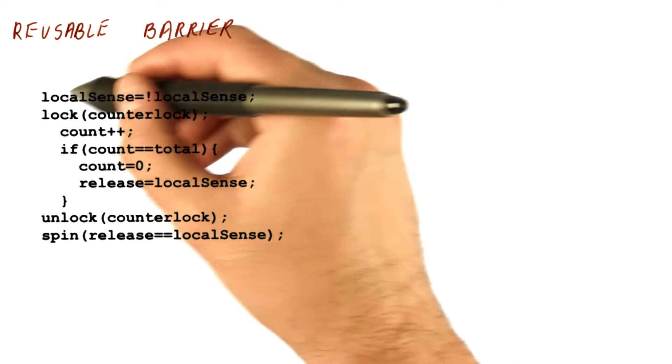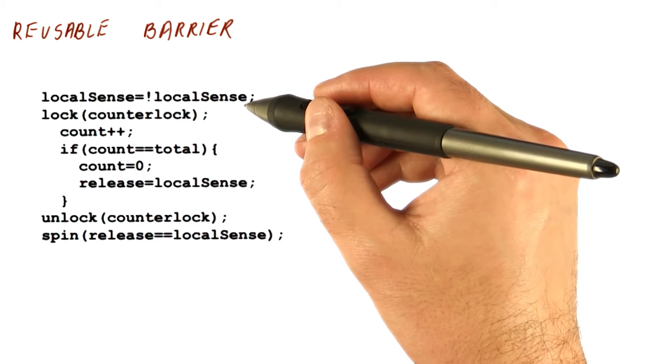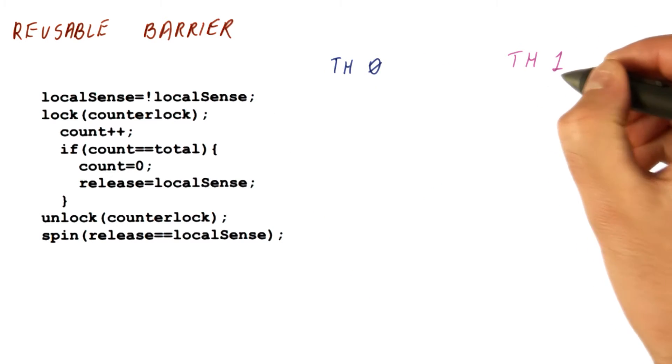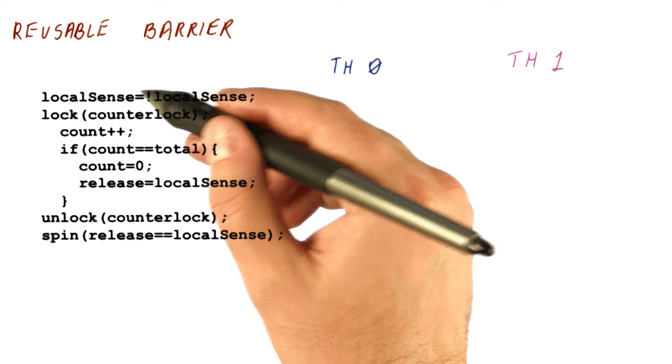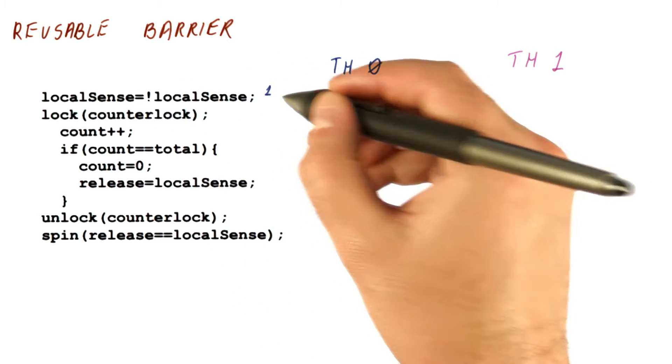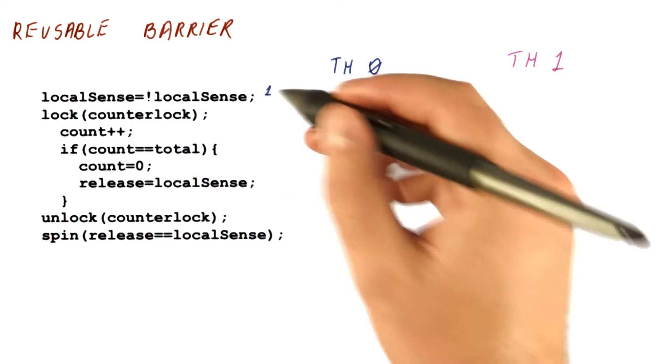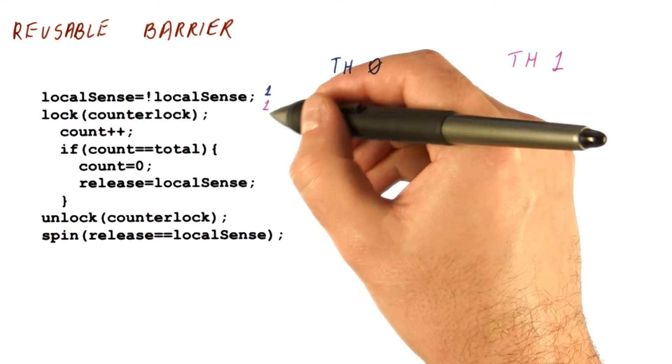Each thread now has a local sense, which is kind of what's the release that we should get in order to get out. So if we have two threads, zero and one, let's say that they started with local sense being zero. Now they're going to get here, and they're both going to figure out that the local sense is one.